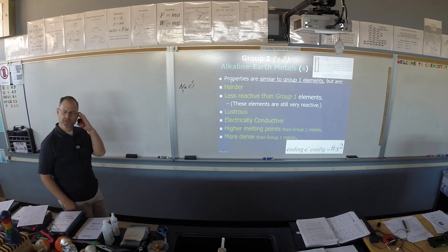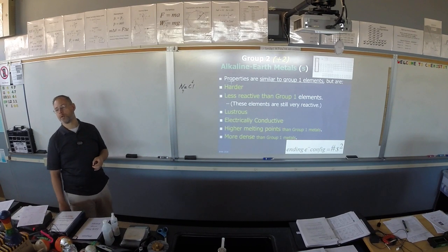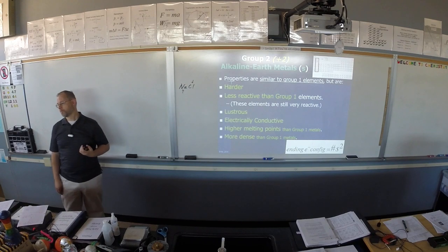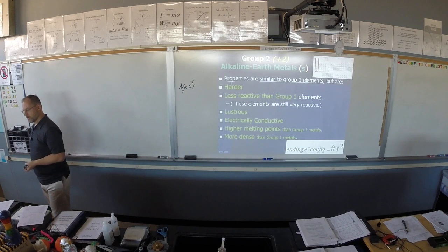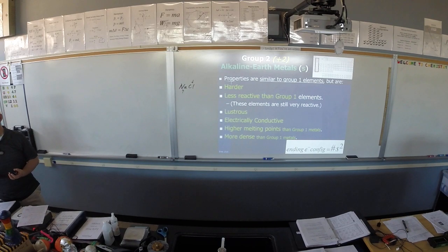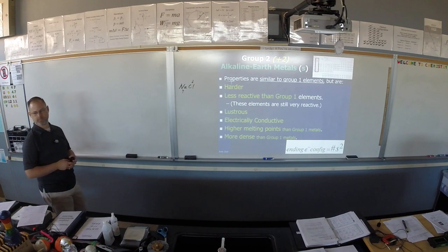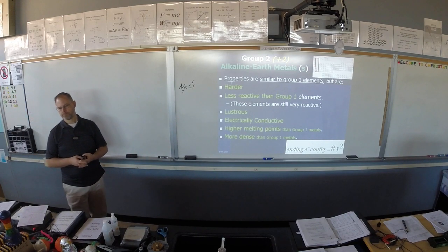One property not listed: they make crazy good alloys. Magnesium and beryllium make really good metal alloys because their low density allows those alloys to have very, very low densities.